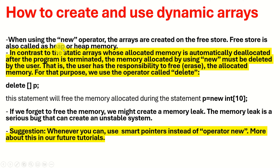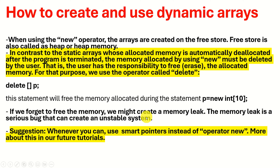When using the new operator, arrays are created on the free store, which is often called the heap or heap memory. In contrast to static arrays, whose allocated memory is automatically deallocated after the program terminates, the memory allocated using new must be deleted by the user. For that purpose we use the operator called delete — we simply type delete followed by the pointer name, and this will free the memory. If we forget to free the memory, we might create a memory leak, which is a serious bug that can create an unstable system. Whenever you can, use smart pointers instead of operator new to allocate space.